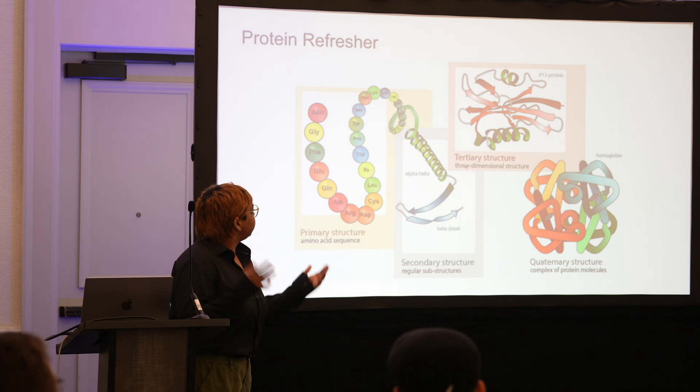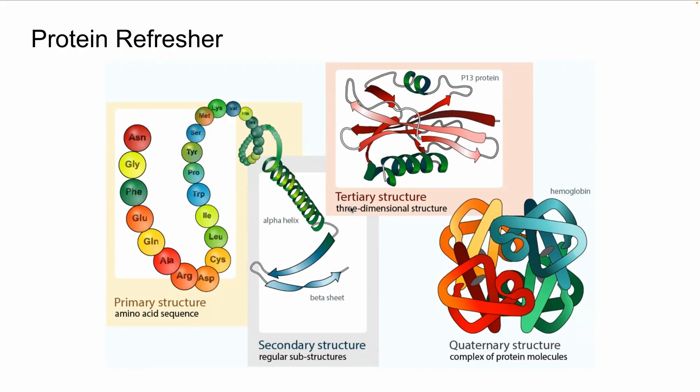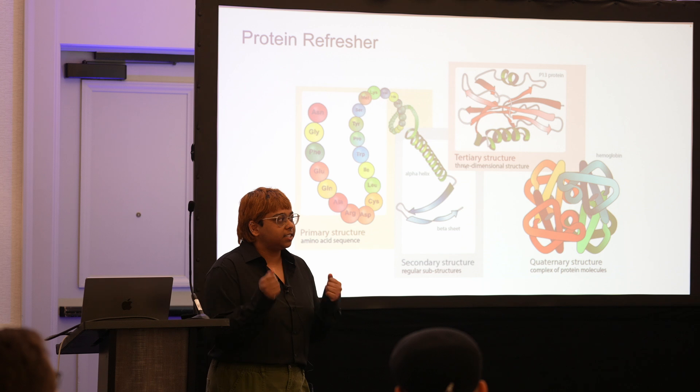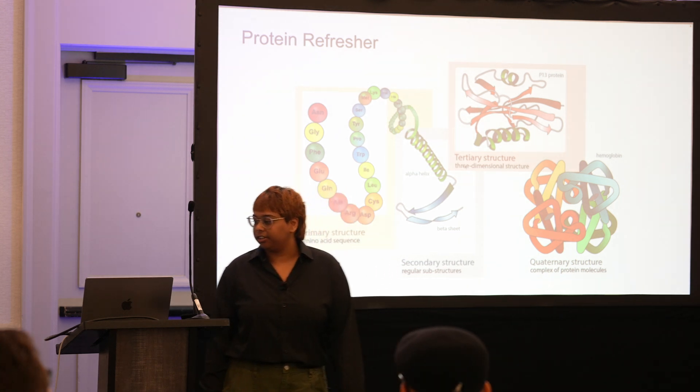We have proteins as a string of amino acids, and they can form various types of structures. Secondary structures include alpha helices, beta strands, and loops. These secondary structures come together to form tertiary structures. Finally, the domains coming together form quaternary structures.